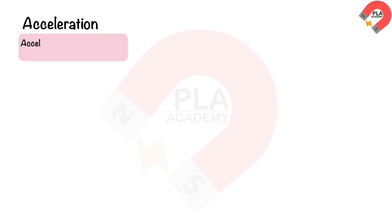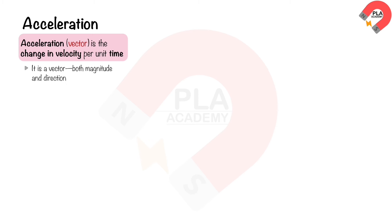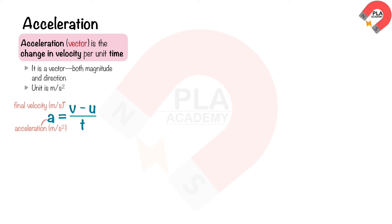Acceleration is the change in velocity per unit time. Acceleration is a vector quantity which has both magnitude and direction. Its unit is meters per second squared. The equation of acceleration is: a = (v − u) / t, where a is acceleration in m/s², v is final velocity in m/s, u is initial velocity in m/s, and t is time taken in seconds.